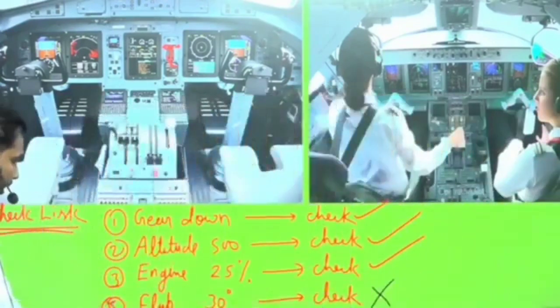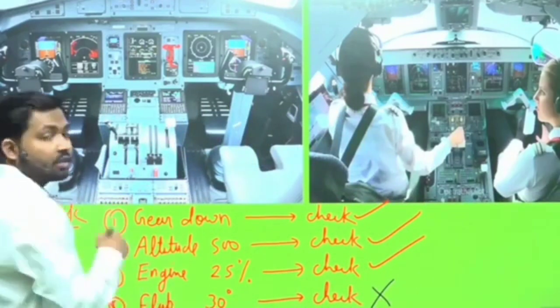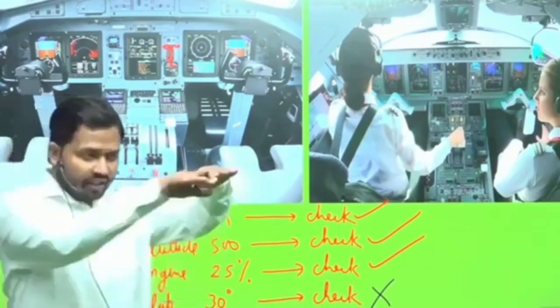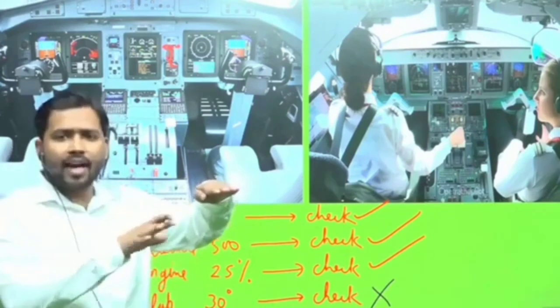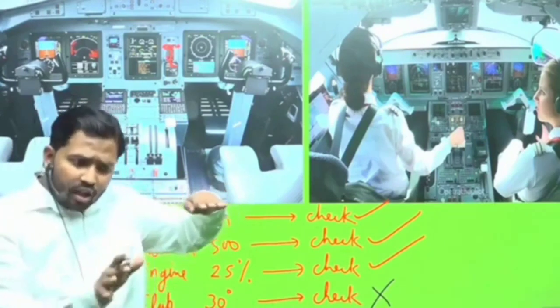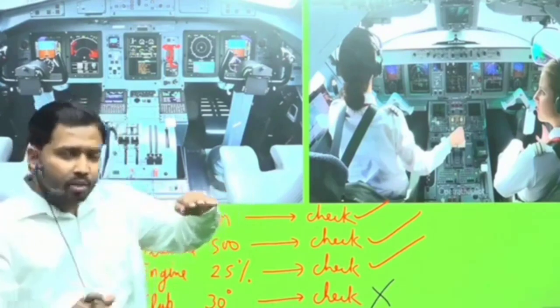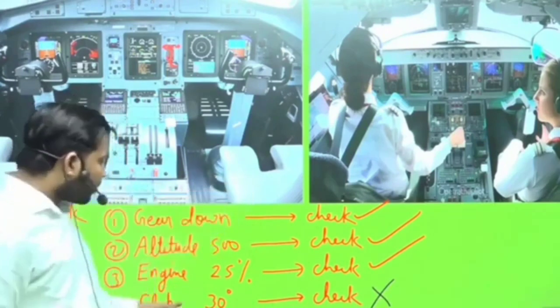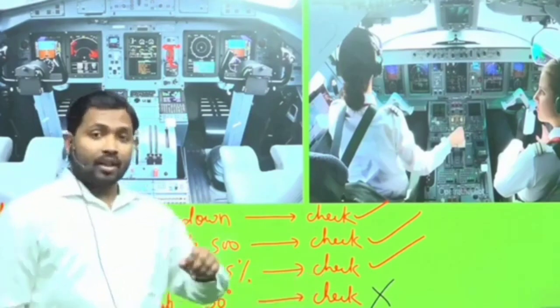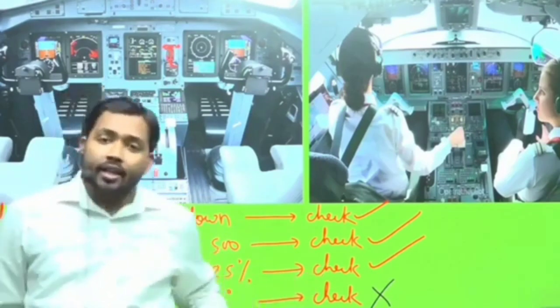In the fourth procedure item, the flaps setting is 30 degrees. Flaps are the surfaces located below the wings. The captain called for flaps 30 degrees, and the first officer said 'check,' meaning the flaps had been set to 30 degrees.